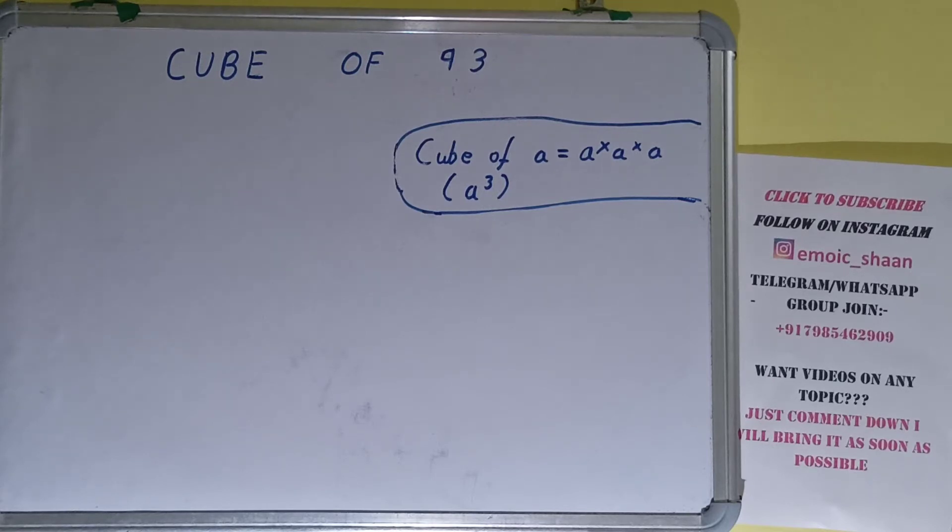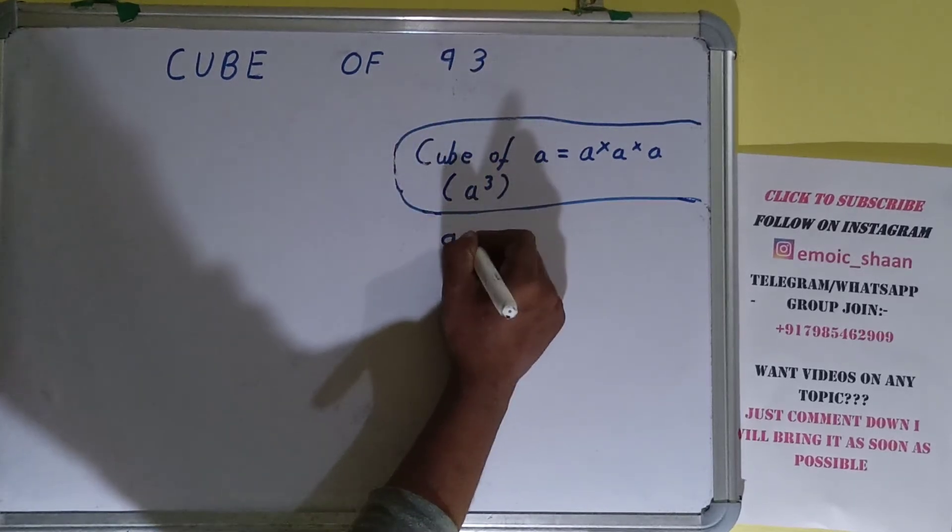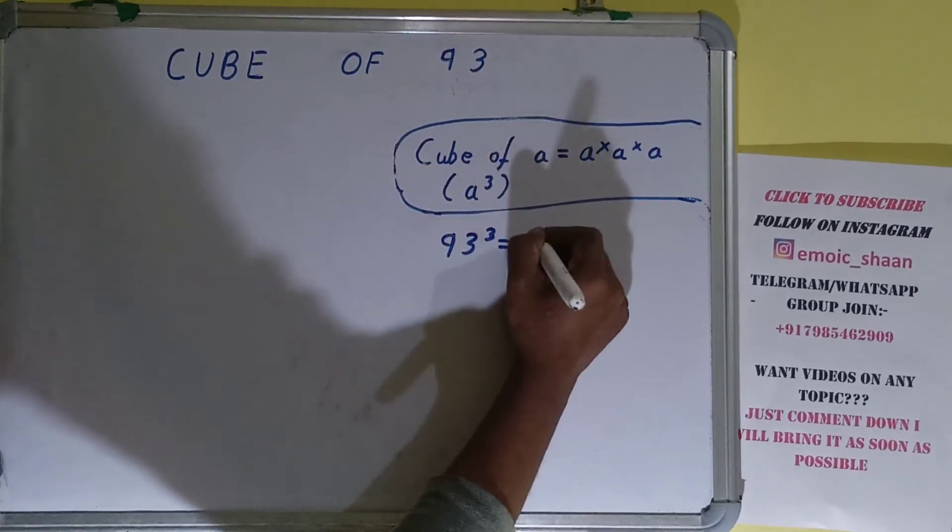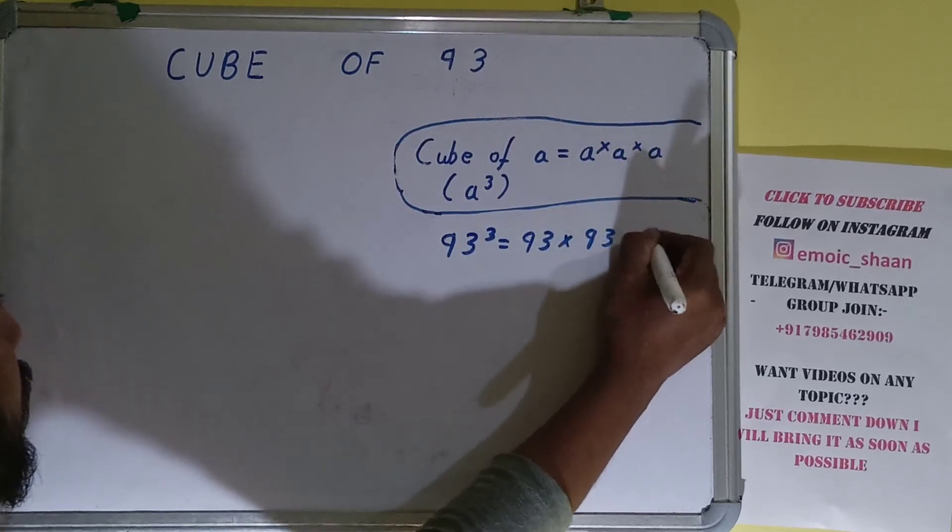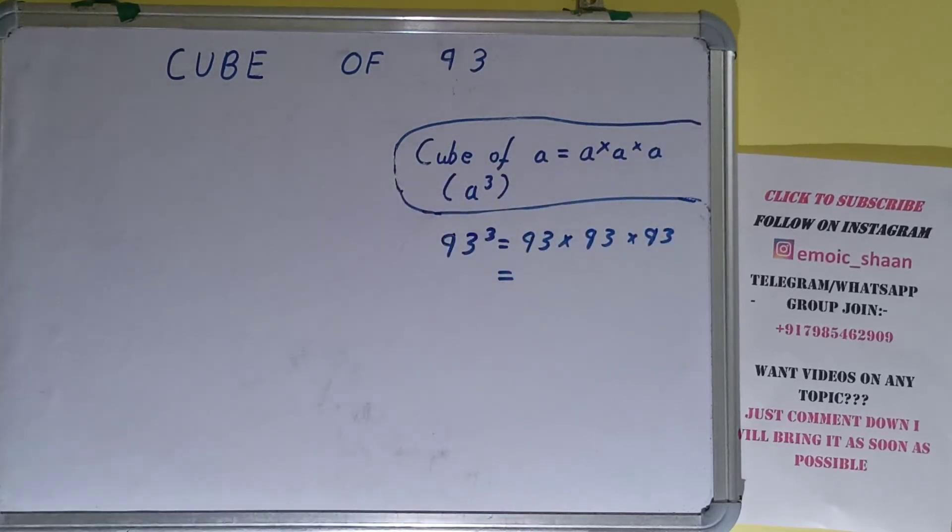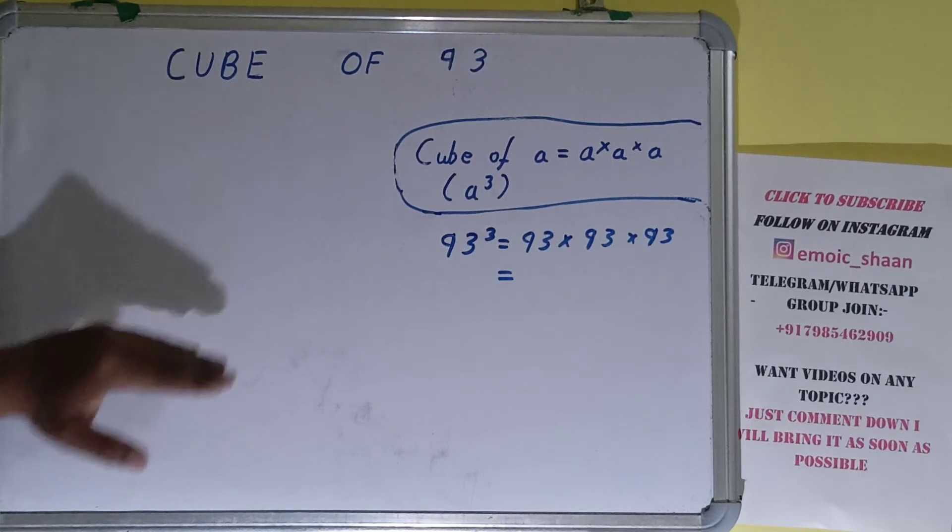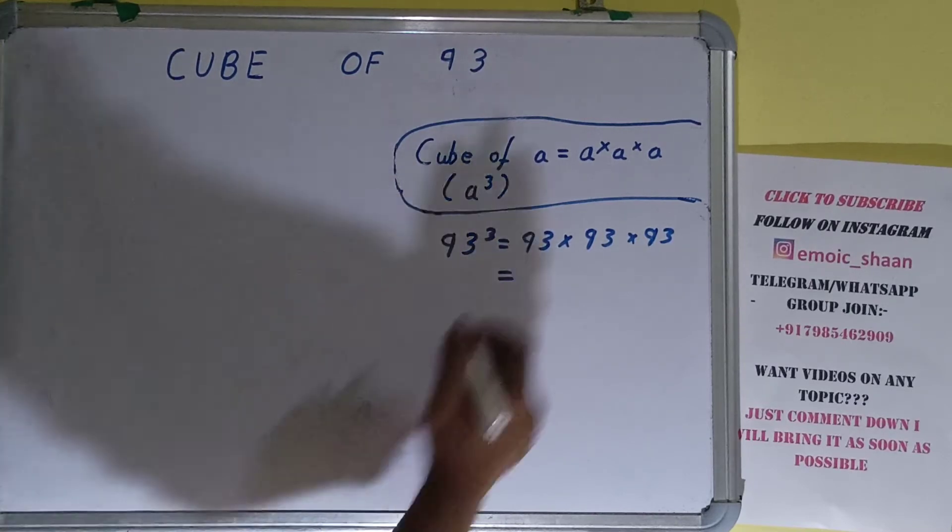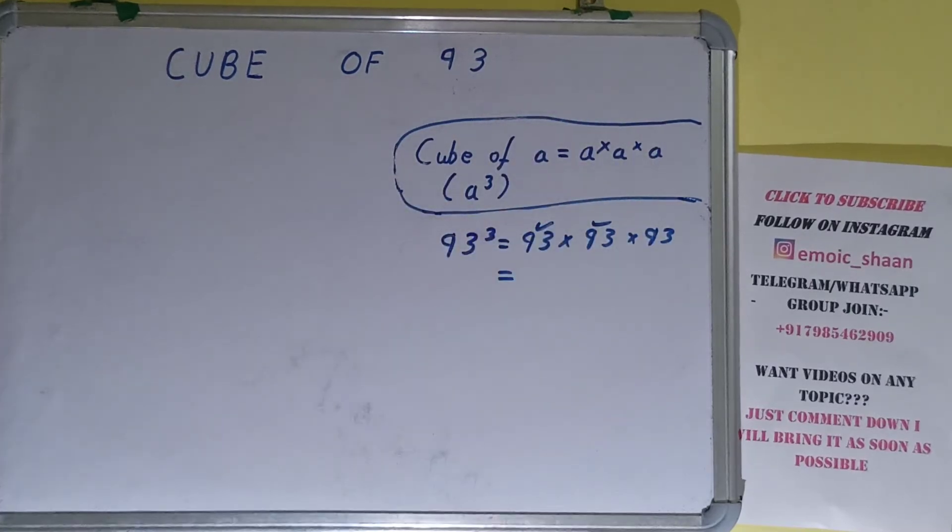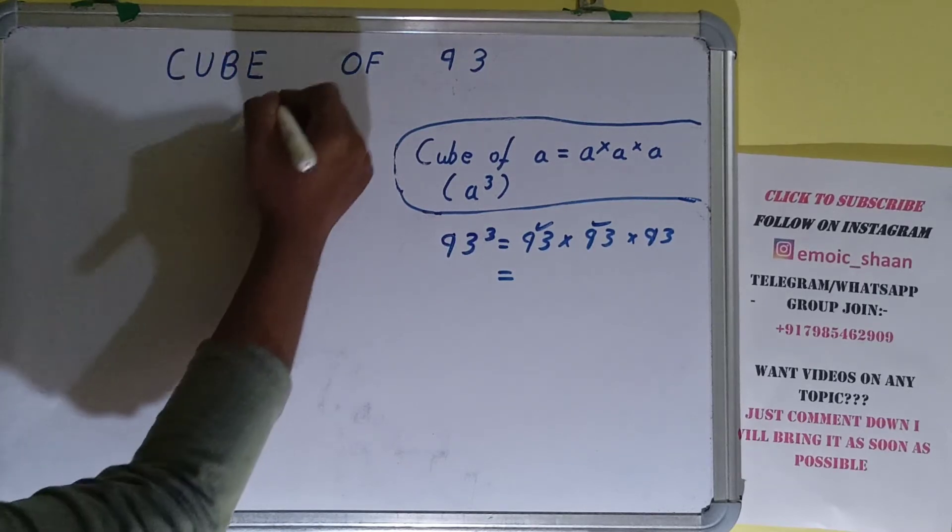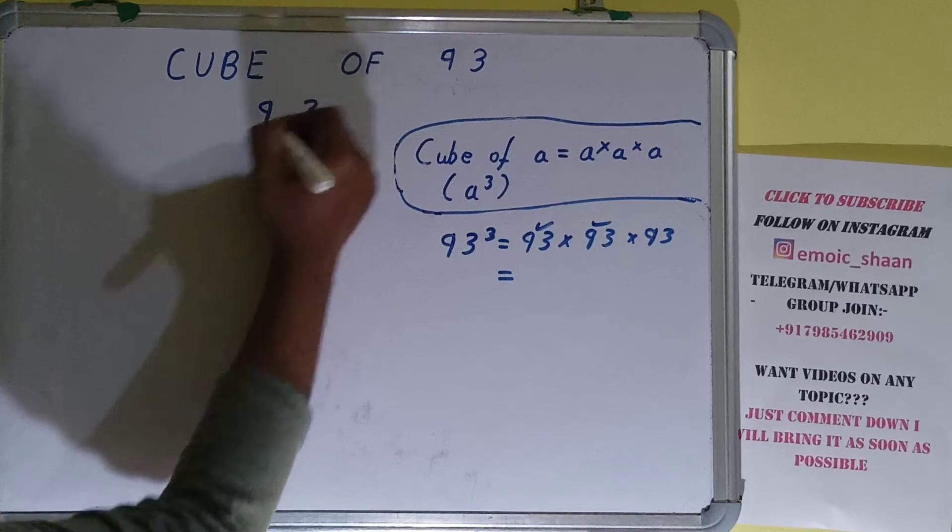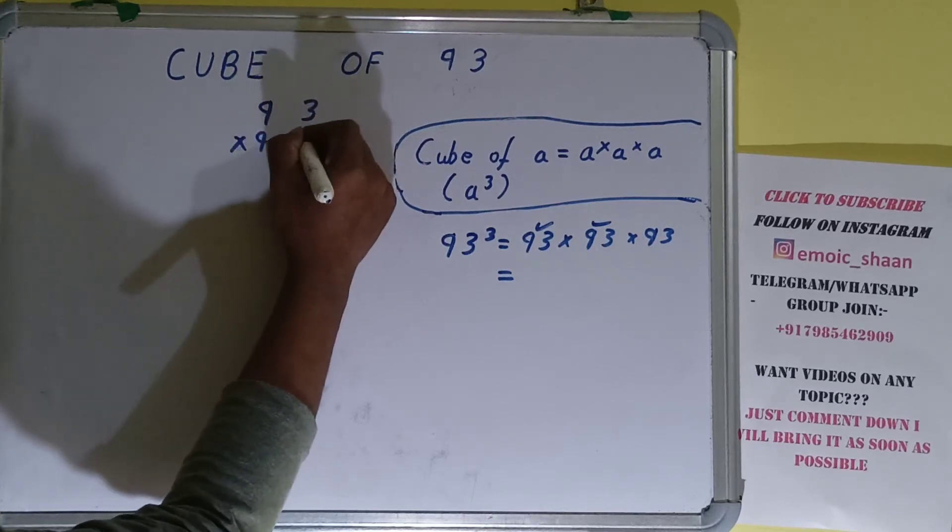Now moving on to our question, we need cube of 93. So for that, in place of a we can keep 93, so 93³ equals 93 into 93 into 93. To calculate the answer we'll do the normal multiplication. We'll first multiply the first two terms and whatever answer we'll be getting we'll multiply with the third term. So let's multiply 93 into 93.